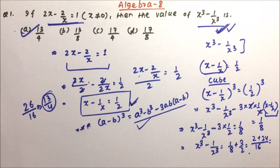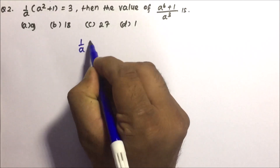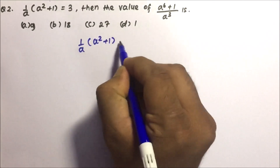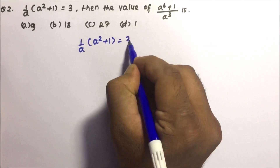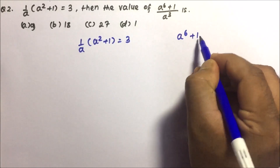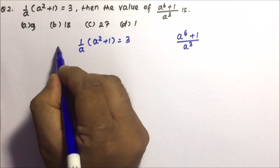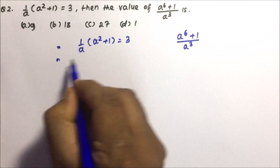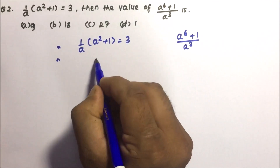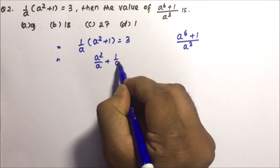Moving towards question number two: 1 by a times (a squared plus 1) is equals to 3, and you have to calculate a to the power 6 plus 1 divided by a cube. If you divide through by a, you get a squared by a plus 1 by a equals 3, meaning a plus 1 by a equals 3.